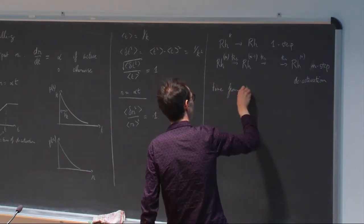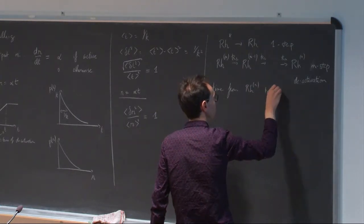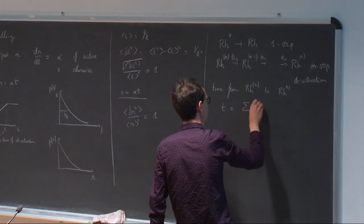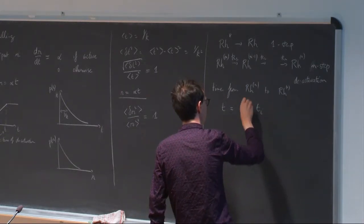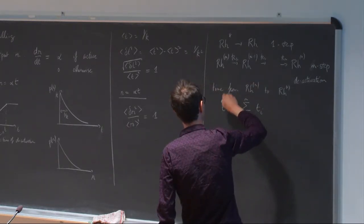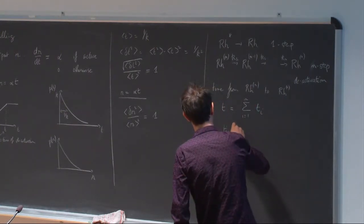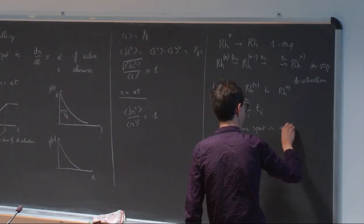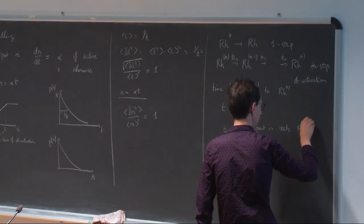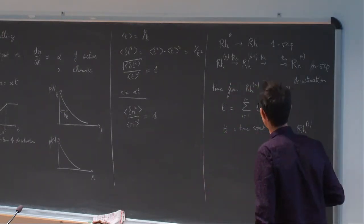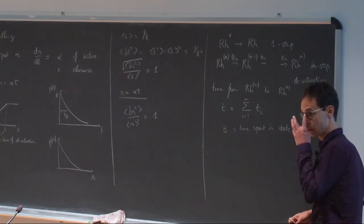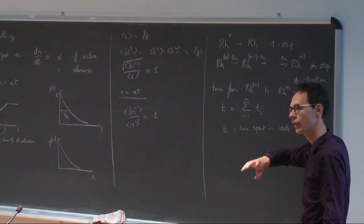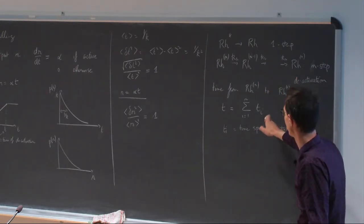But the time from the most activated state to the completely inactivated state — let's call that t — will be a sum of the ti's. So you spend some time ti in each of the states, and the total time you have to wait to go from the most activated to the least activated state is the sum of the ti's.